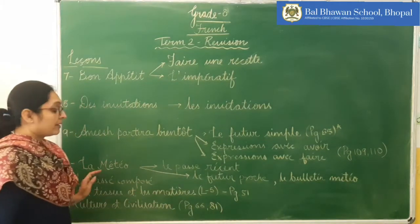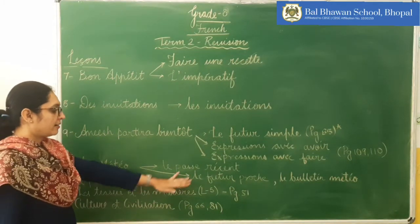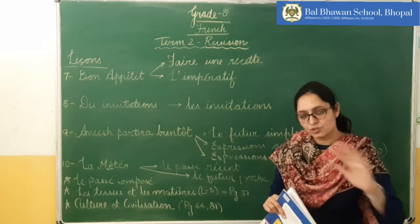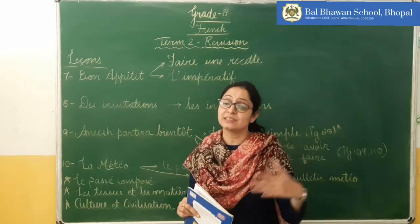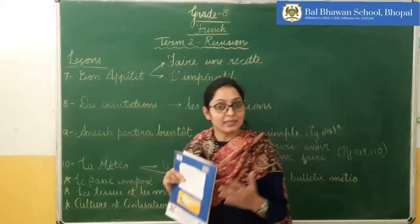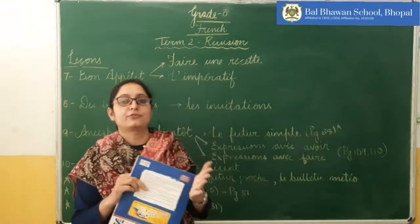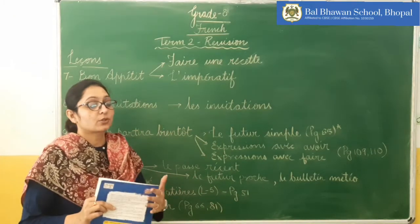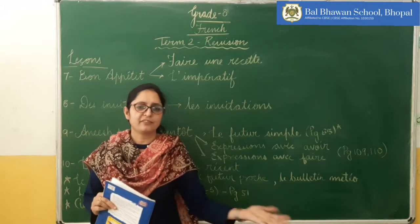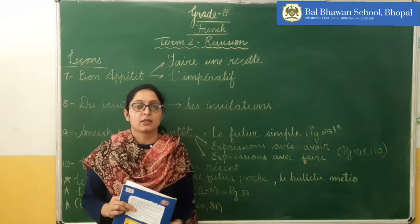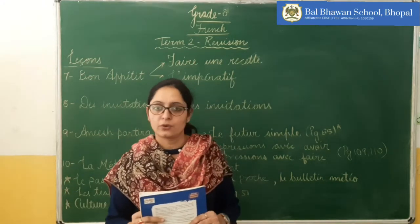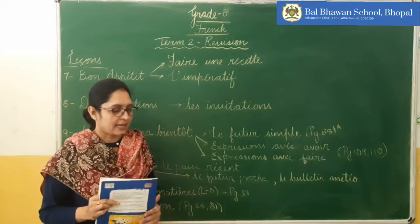Next is the 'La Météo' chapter, which is the last chapter we have done. It covers le passé récent and le futur proche. Le passé récent is the past tense for something that just happened — its formation uses the verb 'venir' conjugated plus 'de' plus the infinitive verb. Similarly, le futur proche is for something about to happen in a few minutes — we use the verb 'aller' conjugated with the infinitive verb.